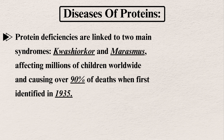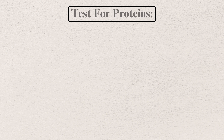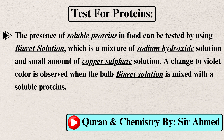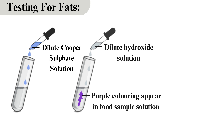Protein deficiencies are linked to two main syndromes: kwashiorkor and marasmus, affecting millions of children worldwide and causing over 90 percent of related deaths when first identified in 1935. Testing for protein: the presence of soluble protein can be tested using Biuret solution, which is a mixture of sodium hydroxide solution and a small amount of copper sulfate solution. A change to violet color is observed when the Biuret solution is mixed with a soluble protein solution.